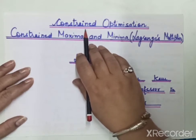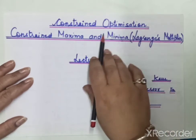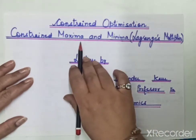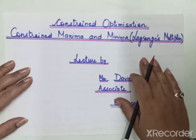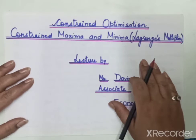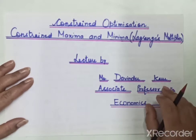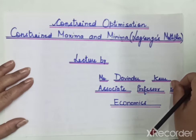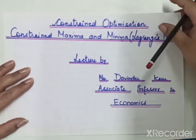Hello students, today our topic of discussion is constrained optimization. We have to find constrained maxima and minima of a function given with two variables x and y, subject to a given constraint or condition. We can also call it Lagrange's multiplier. So today we are going to find constrained maxima and minima with the help of Lagrange's multiplier.